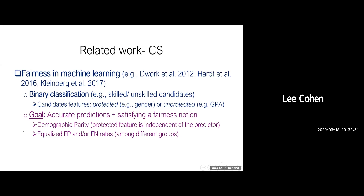What about computer science? You've probably heard about the growing interest in combining fairness in machine learning systems, in which a task of binary classification is often considered, where candidates are characterized by both protected and unprotected features. By protected, you can think of any attribute that shouldn't have an impact on the prediction, such as gender or race. The goal is to get accurate predictions that also satisfy one or more fairness notions, such as demographic parity or equalized false positive and false negative rates among different groups.